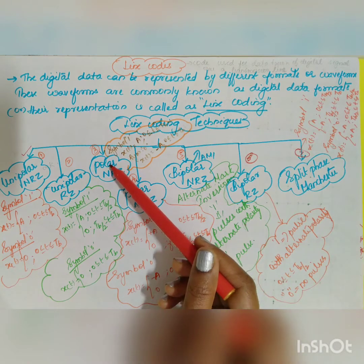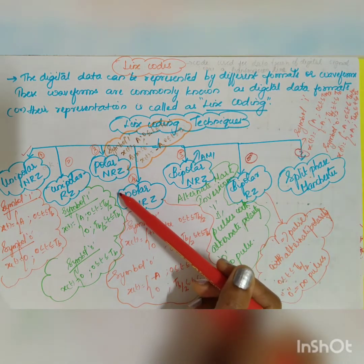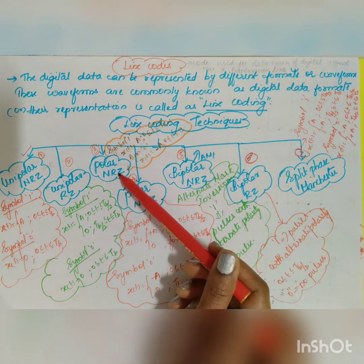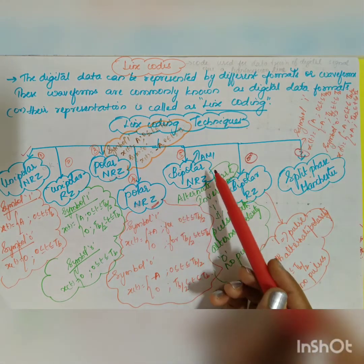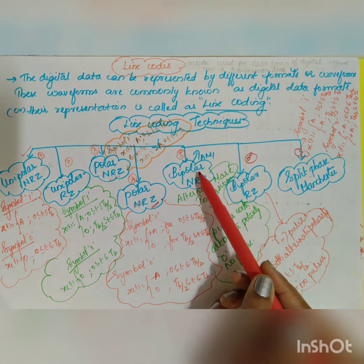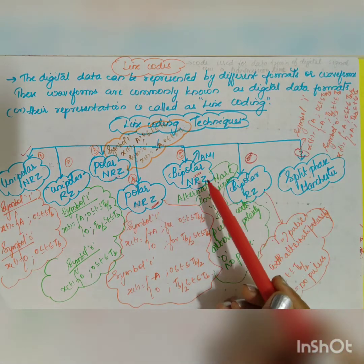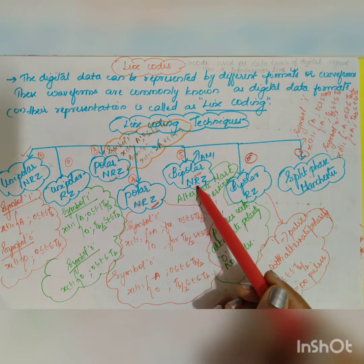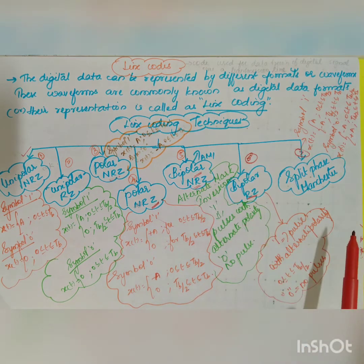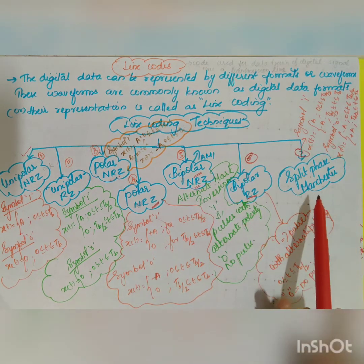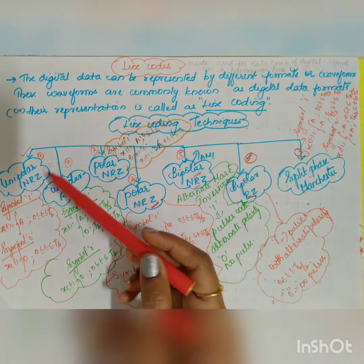The next type is polar. In polar, you have two types: polar non-return to zero and polar return to zero. Next is bipolar, which also has two types: non-return to zero and return to zero. And the last one is called split phase Manchester.